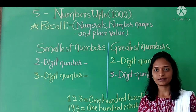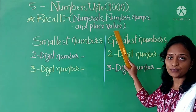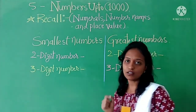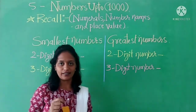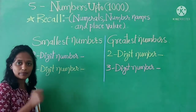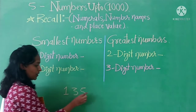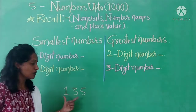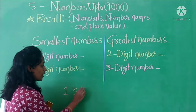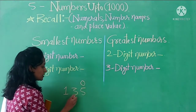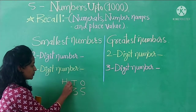Let us discuss place value. We have already gone through this concept. Let us recall it once again with an example. The number is one hundred thirty five. Five is at one's place, three is at tens' place, and one is at hundreds' place.